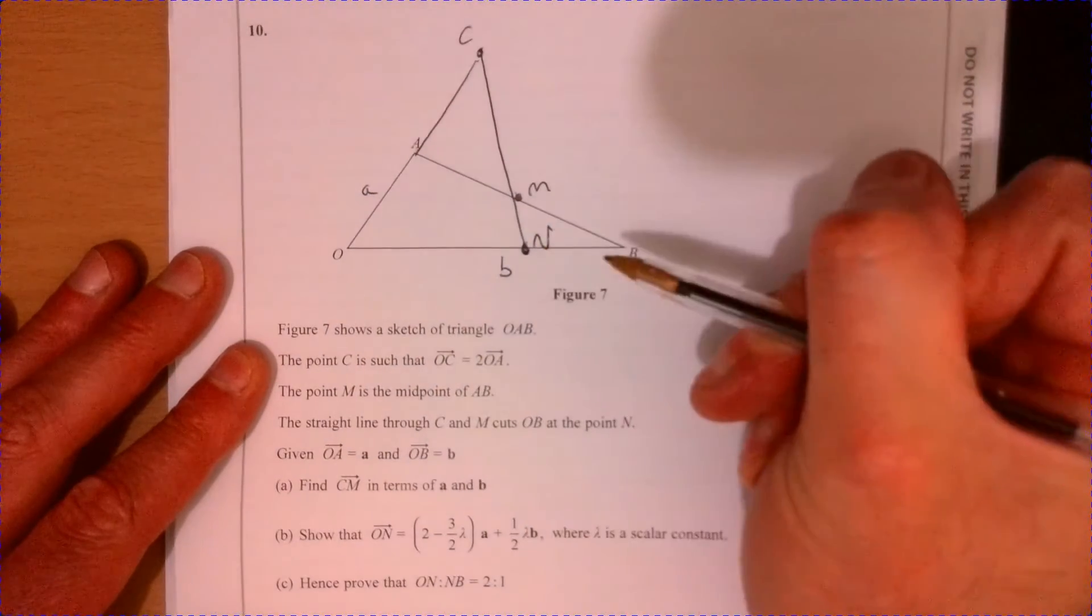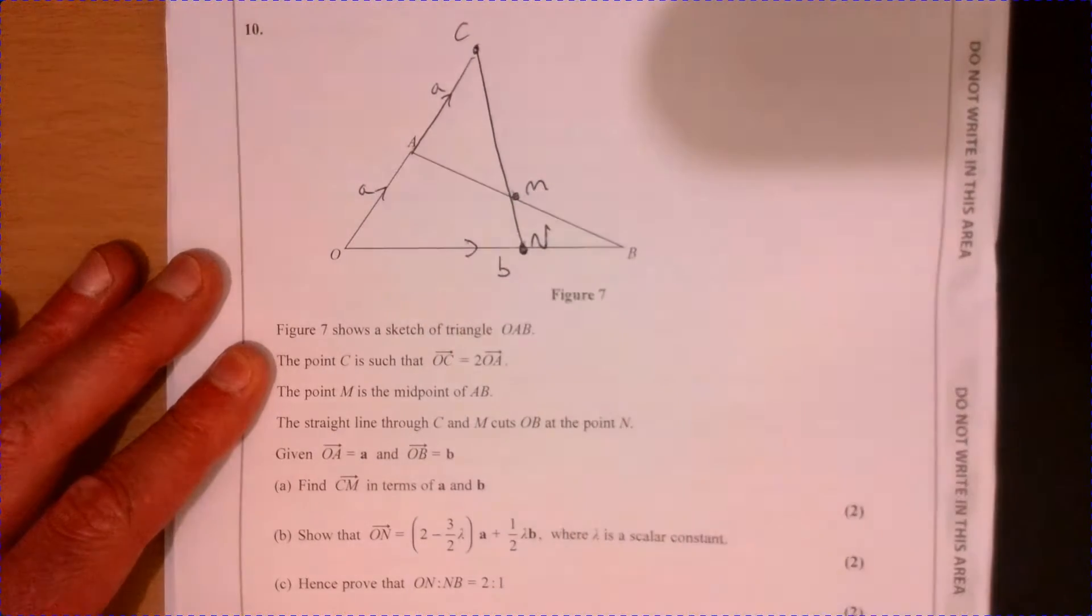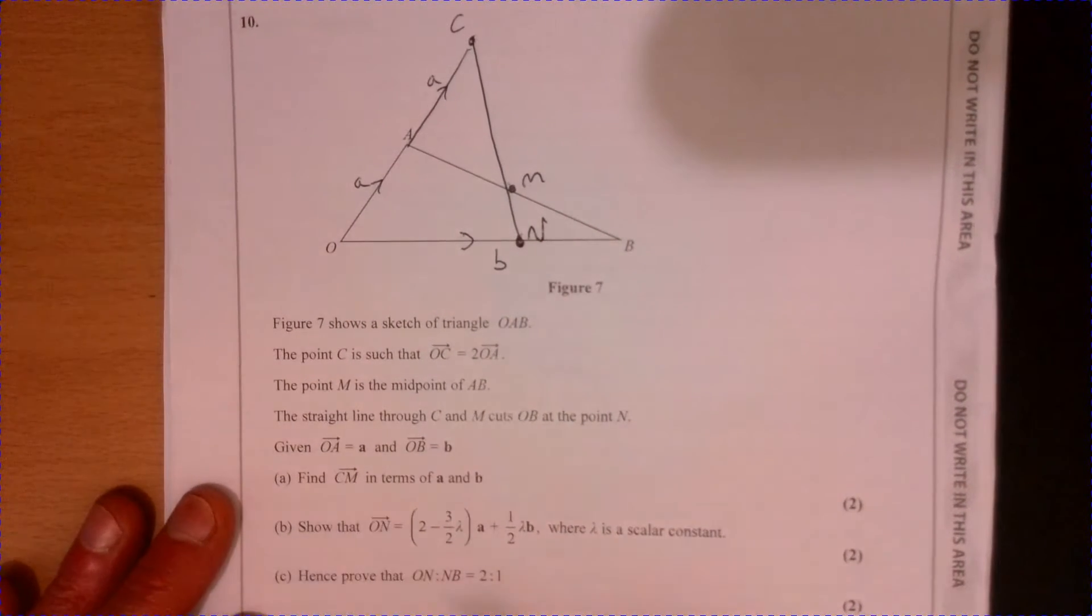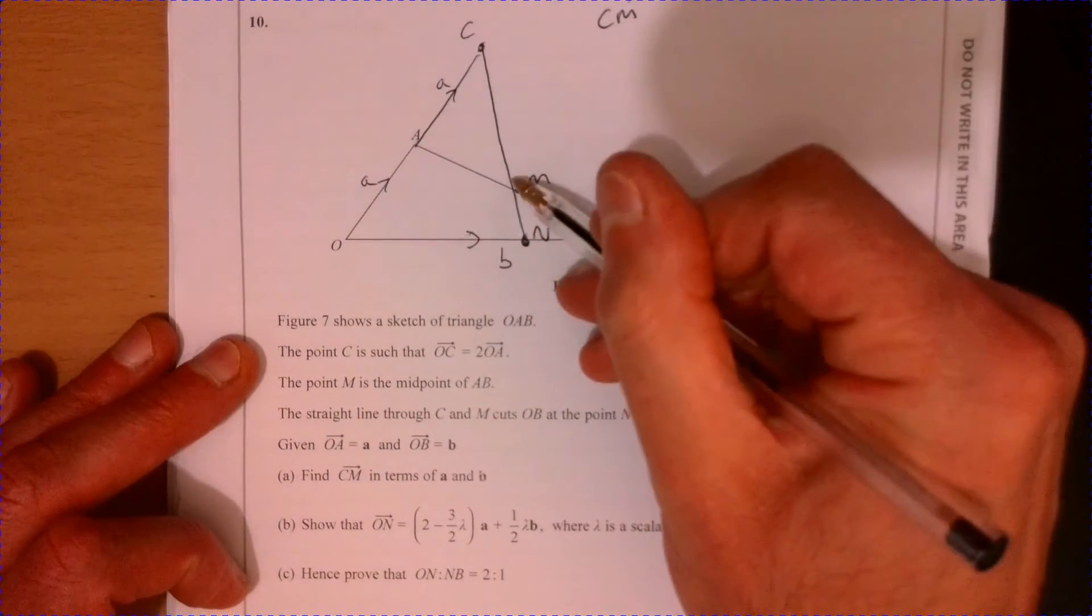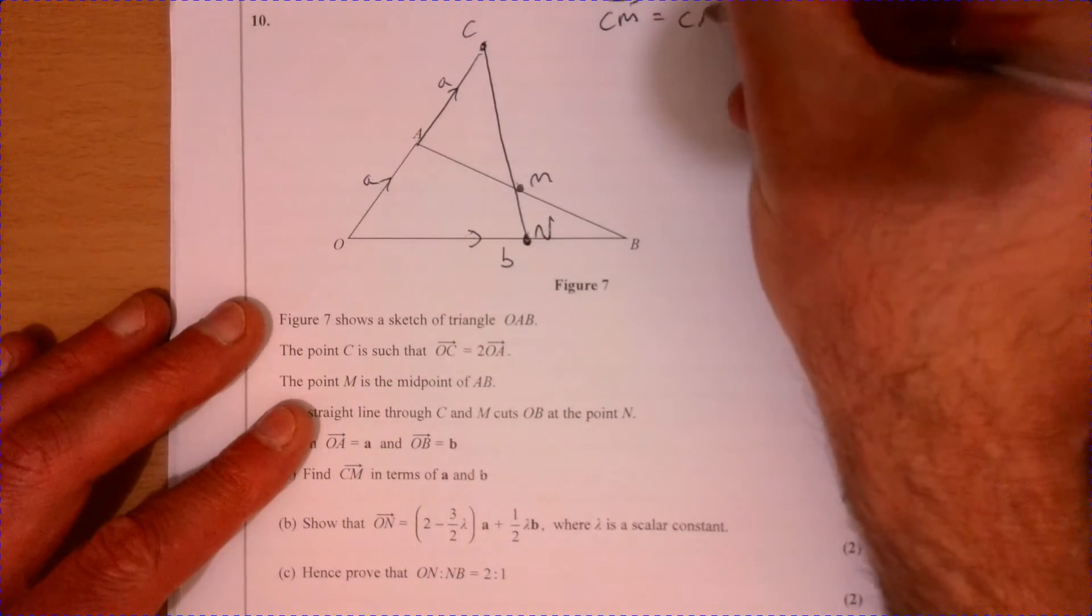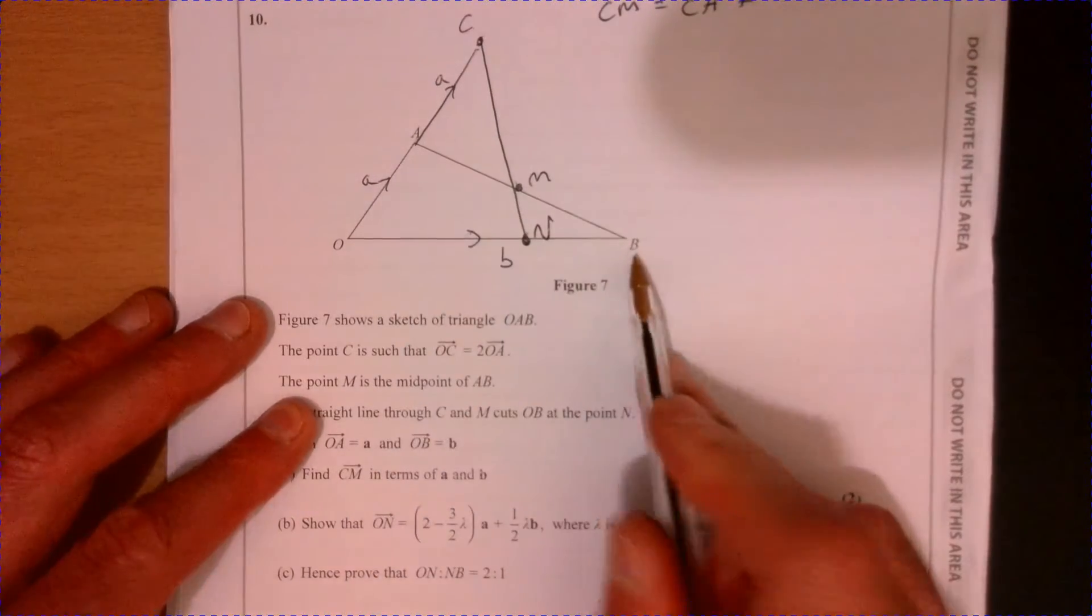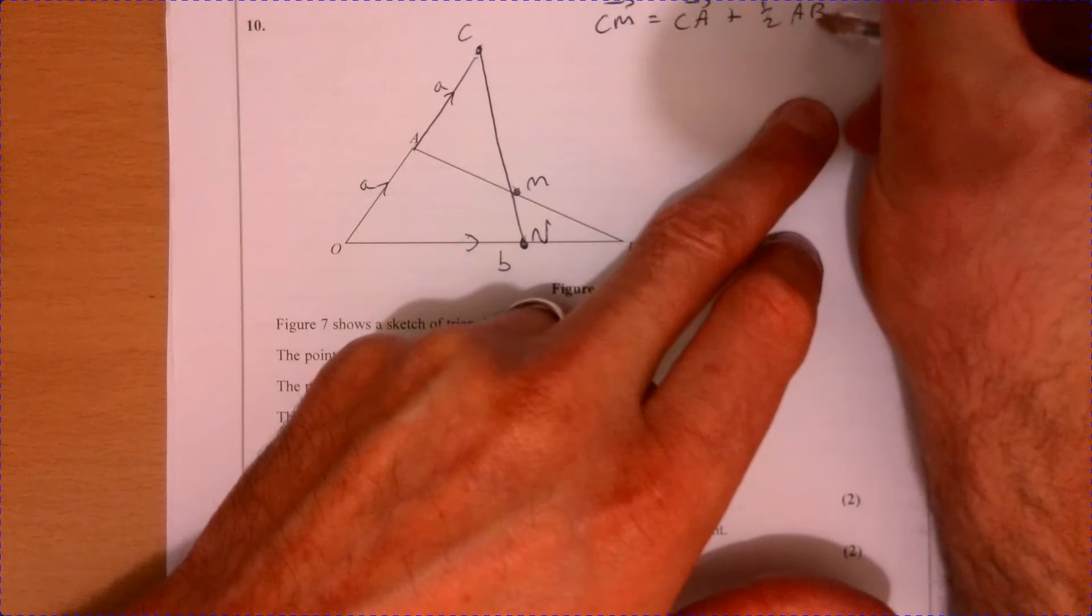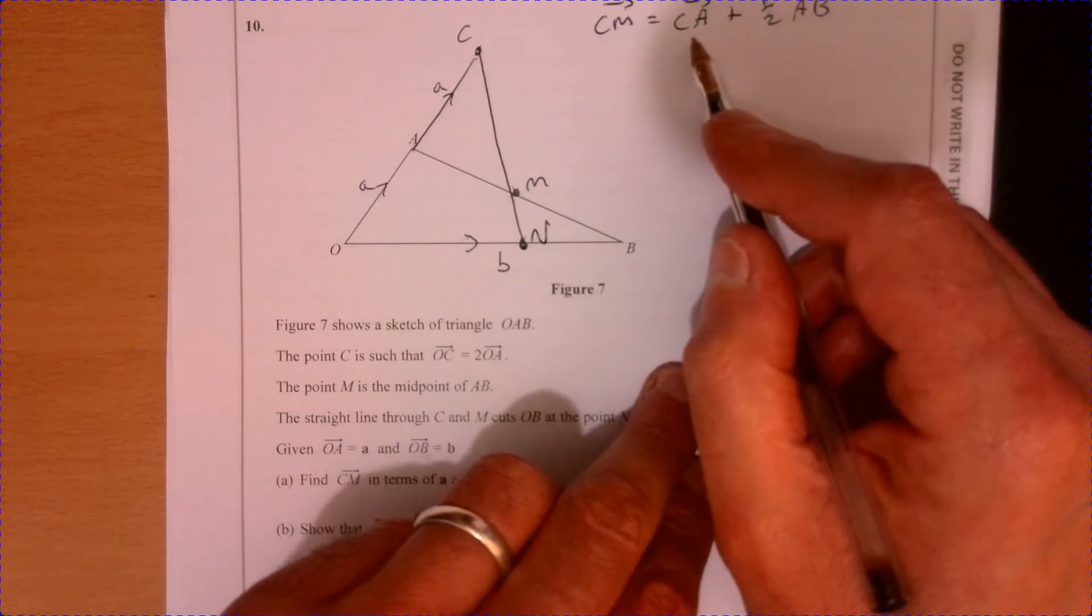We're told that's a and that's b, so that's also a. Just put the direction on as well. Okay, so what's the first question? The first question is find CM. So how do we get from there to there? It's going to be CA plus half of AB.